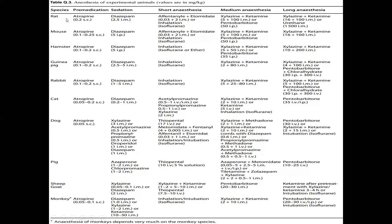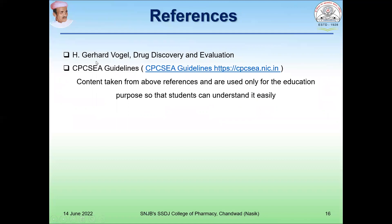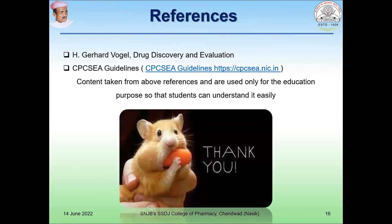A reference chart covers anesthesia of experimental animals, listing various anesthetics along with premedicating compounds, sedative compounds, and short, medium, and long-duration anesthesia options. This chart helps choose the appropriate anesthetic agent based on animal type and desired duration of anesthesia. References include Vogel's Drug Discovery and Evaluation and CPCSEA guidelines. These contents are used only for educational purposes.